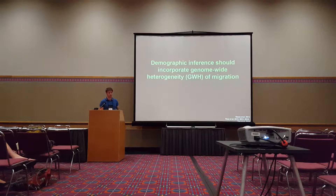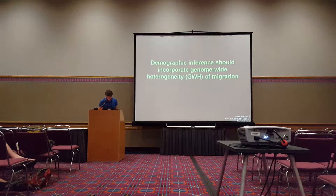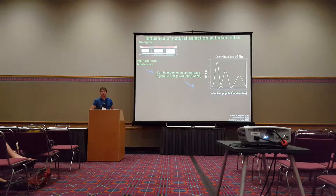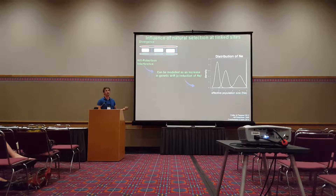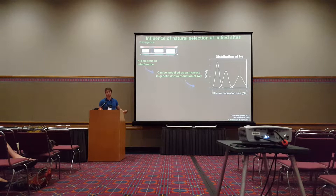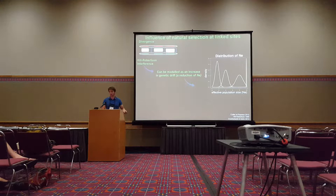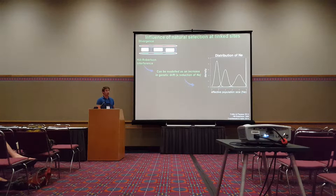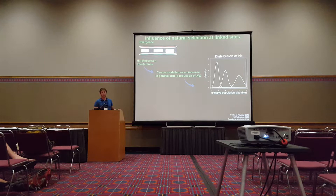A second problem often depicted in demographic inference is that selective processes, like selective sweeps or background selection, will reduce the level of genetic diversity within the genome. This results in higher stochasticity of allele frequencies, which increases the level of genetic drift. Taking this into account can be done by modeling variation in the effective population size along the genome, and this could help to draw better inference.